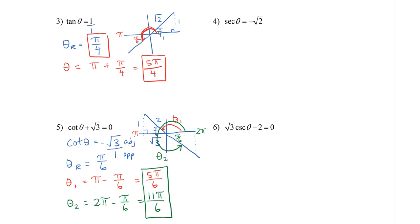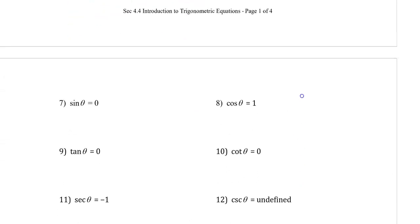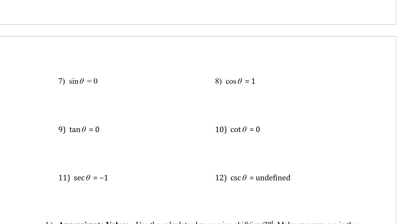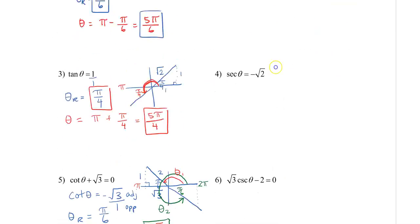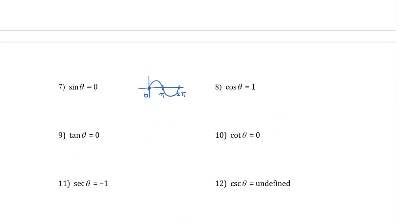Now let's look at three different types that still use exact values but are solved using graphs rather than special triangles. For sin θ = 0, we look at the sine graph and find it equals 0 at 0, π, and 2π. However, because our domain doesn't include 2π, we say sin θ = 0 at θ = 0 and θ = π.